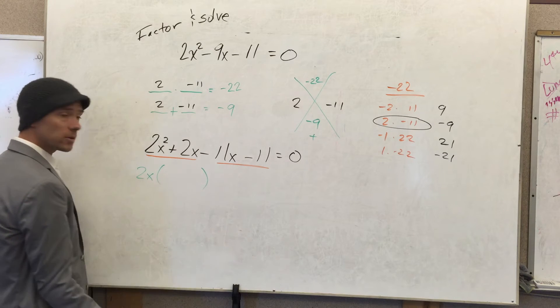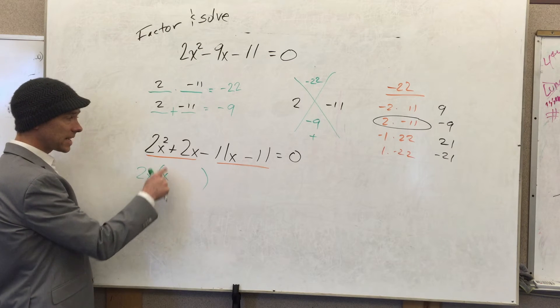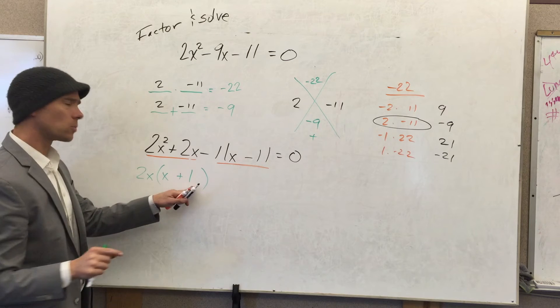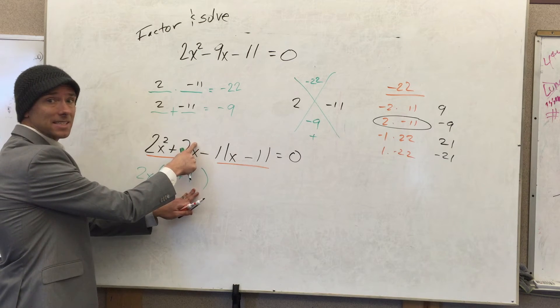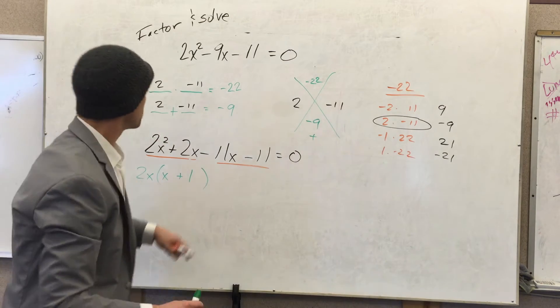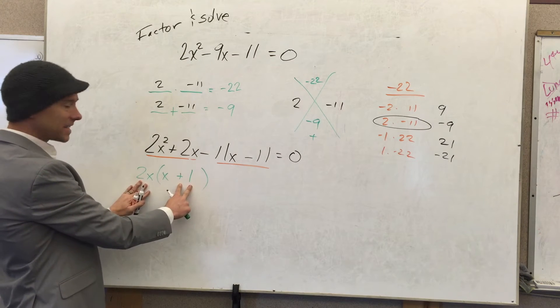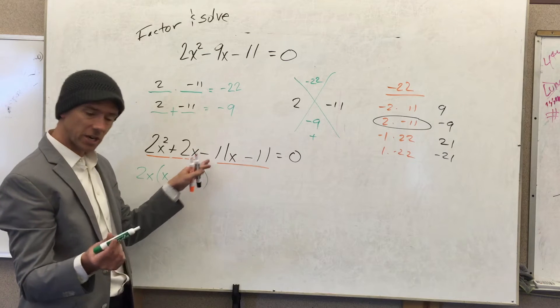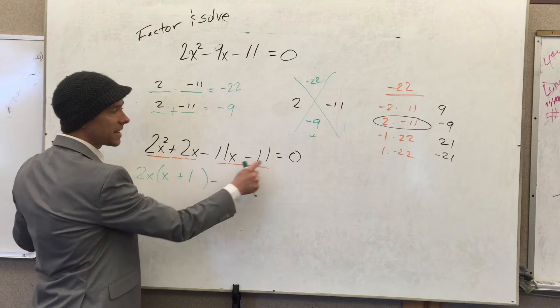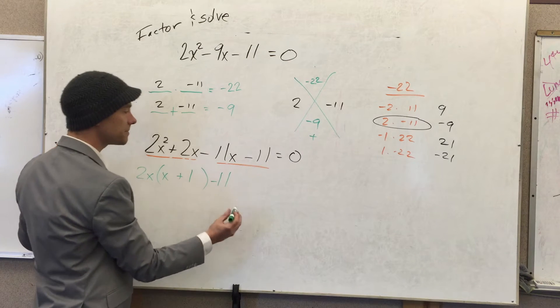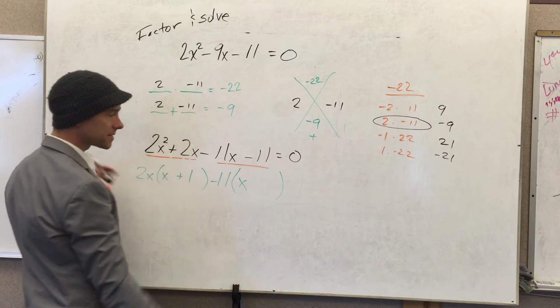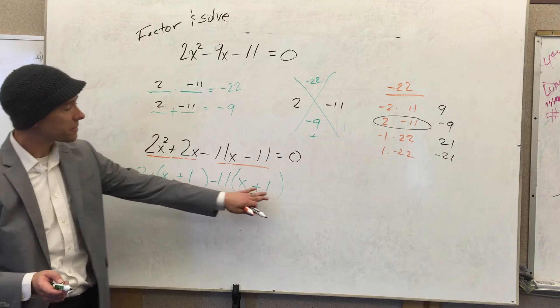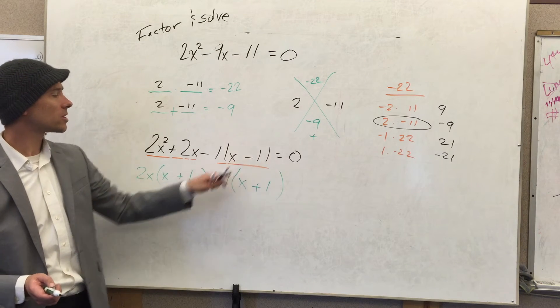Between 2x squared and 2x, I'm going to take out a 2x, and what would be left over is an x plus 1. This is tricky because you think, 'Oh, I took out the 2x so there's nothing left.' No, there's a 1 there, because when you multiply you should get back to the last step. Between 11x and negative 11, I'm going to take out an 11. What's left over is an x. This has to become a plus 1 because when you multiply in you get negative 11 times positive 1 is negative 11.